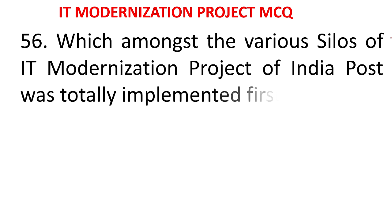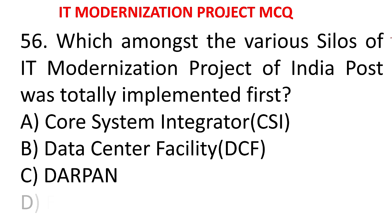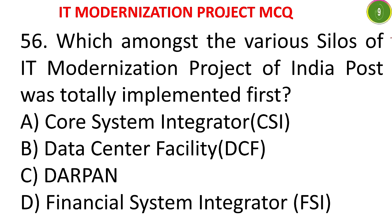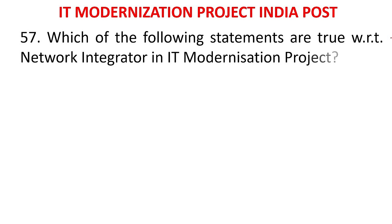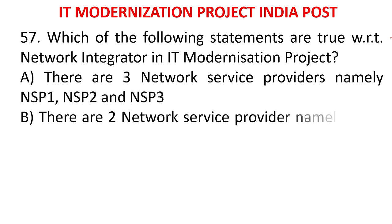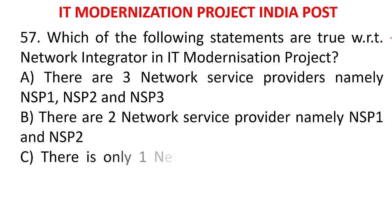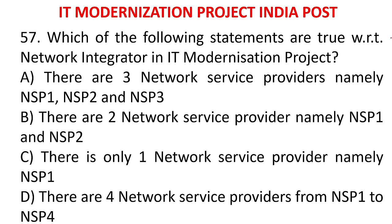MCQ 54: Which among the various silos of IT modernization project of India Post was totally implemented first? A) Core system integrator, B) Data center facility, C) DARPAN, D) Financial system integrator. The answer is data center facility in Navi Mumbai. MCQ 55: Which of the following statements is true regarding the network integrator in IT modernization project? A) Three NSPs (NSP1, NSP2, NSP3), B) Two NSPs (NSP1, NSP2), C) Only one NSP, D) Four NSPs. The answer is two network service providers - NSP1 and NSP2.